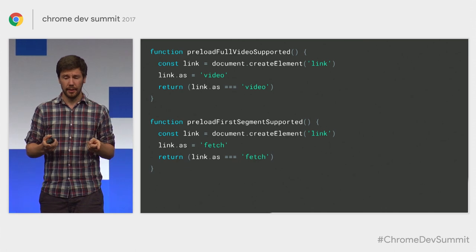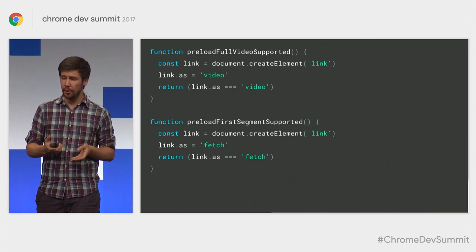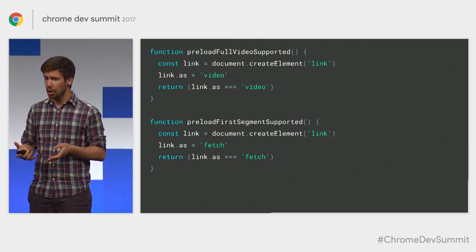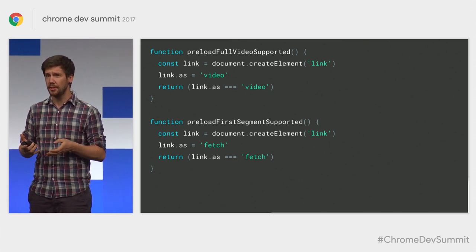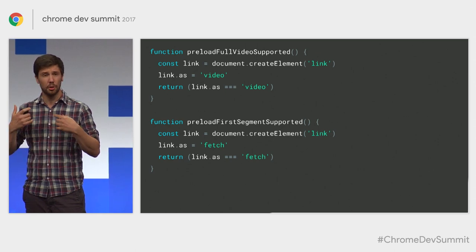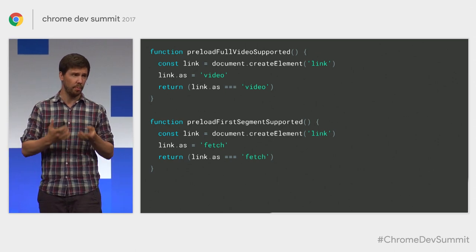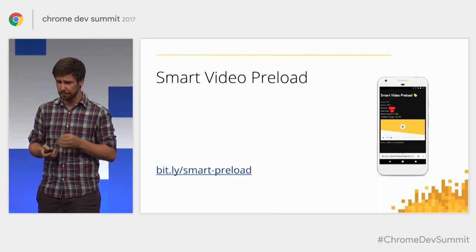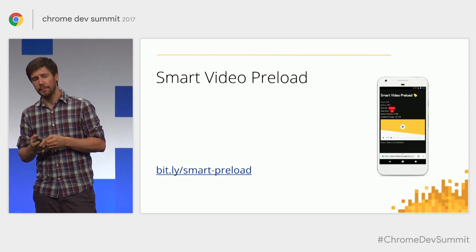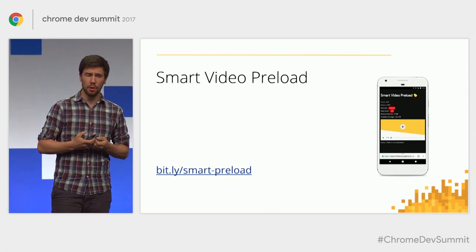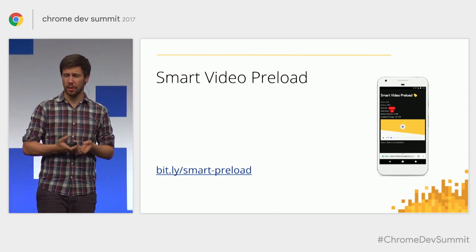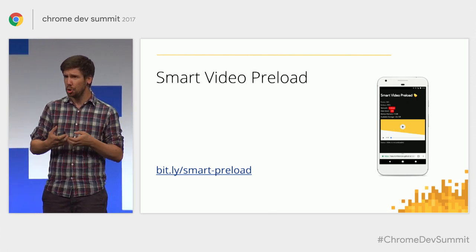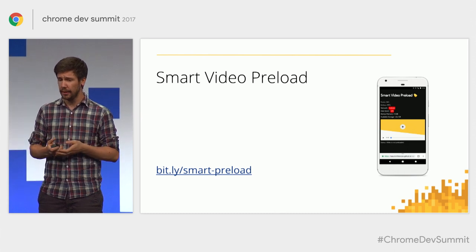As link preload is not supported everywhere yet, you should detect its availability with feature detection snippets in order to adjust your performance metrics. It's not because you know how to preload content that you should always do it no matter what — there are many signals in the web platform you can use to provide a delightful media experience to all users.